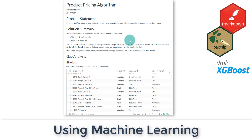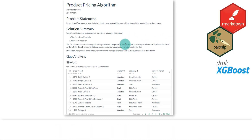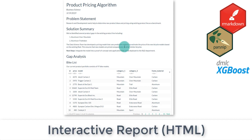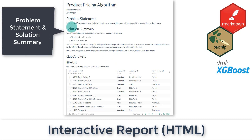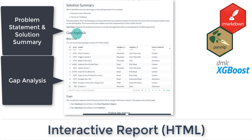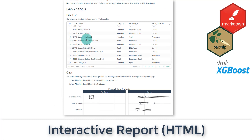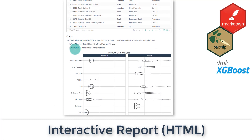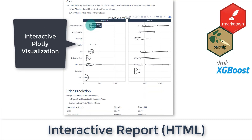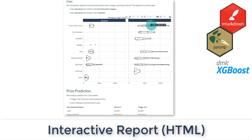This is the interactive report that we're going to build. It's going to be an HTML-based report. It's going to have a problem statement, a solution summary, and then a gap analysis — these are the details of our analysis. It's going to have the bike list, and an interactive HTML-based Plotly chart that shows what products are currently available and where the gaps are.